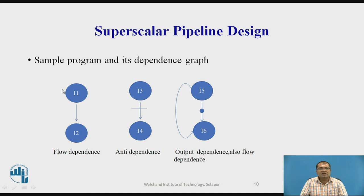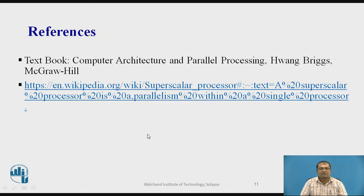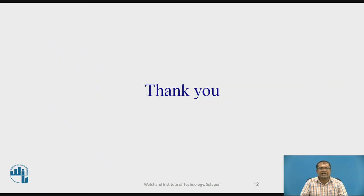This sample diagram shows the three types of dependencies: flow dependence — how I2 depends on I1; anti-dependence — how I4 depends on I3; and output dependence along with flow dependence — where I6 depends on I5. Thank you.